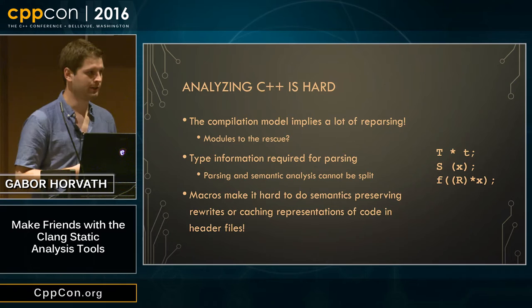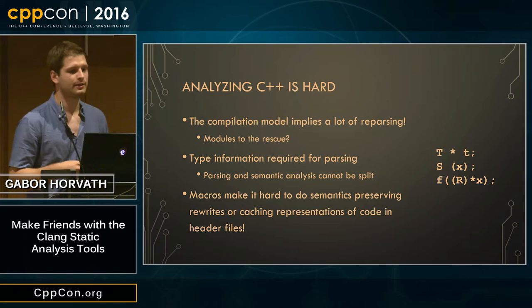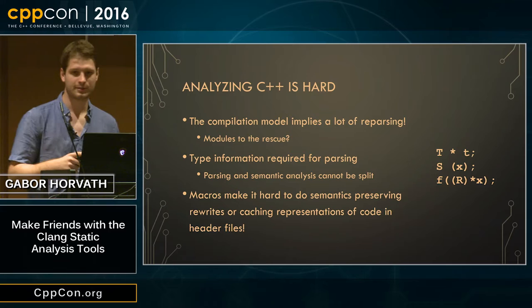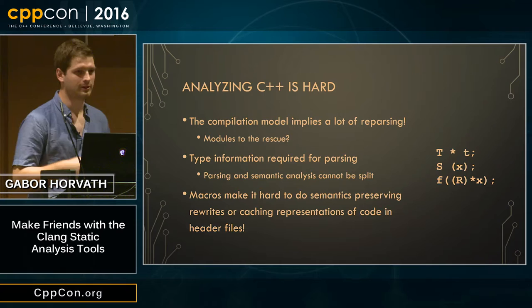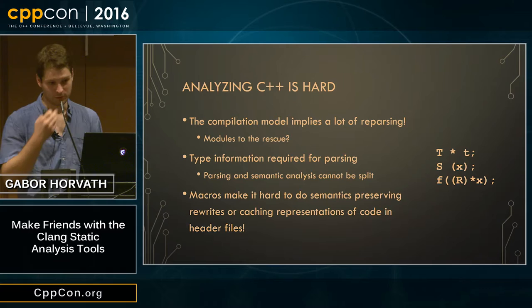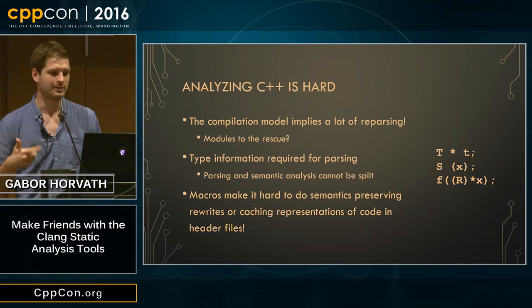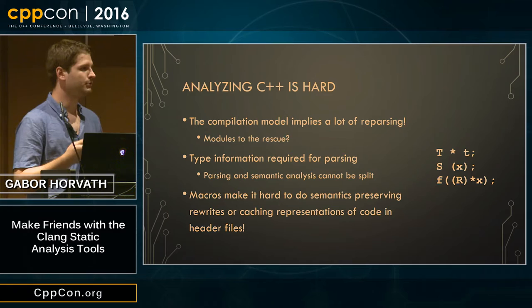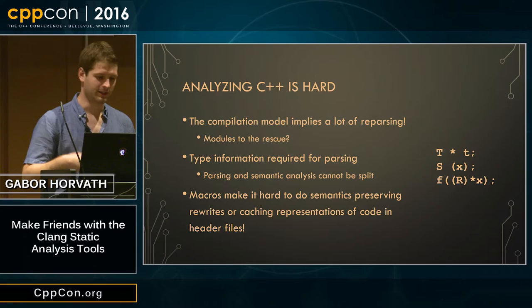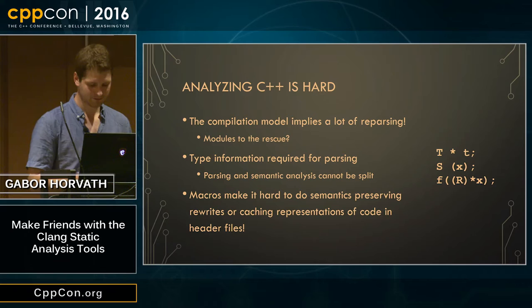Macros make it very hard to do semantics-preserving rewrites. If we want to transform code and use lots of macros, it is not easy to do. Also because of macros, we cannot cache the AST representation of header files, because headers may be included with different macro options in each translation unit, making this a very hard problem.